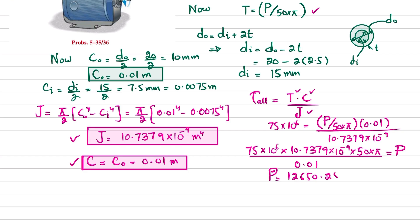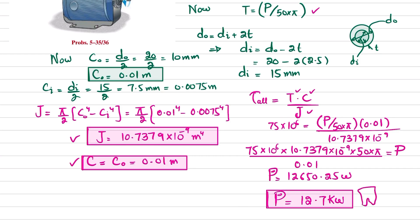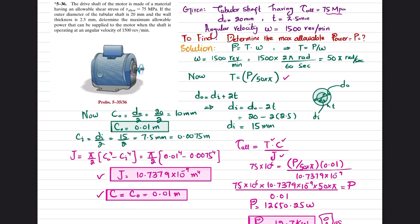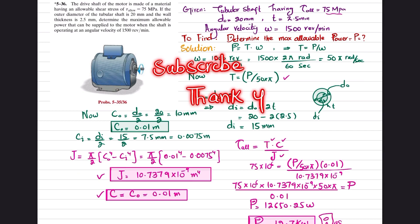So the maximum allowable power is approximately 12.7 kilowatts. That was all for Problem 5-36. I hope you enjoyed and learned from this video. If you're new to my channel, please subscribe and press the bell icon for notifications. Feel free to ask any questions in the comments. Thank you for watching.